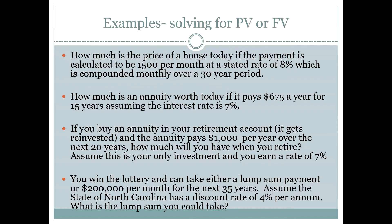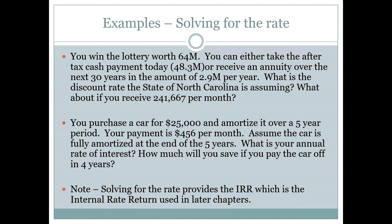Now we'll jump to a bunch of examples. Try to work them without looking at the solutions — these are problems you've already seen in some form, so don't be intimidated by the word problem or the payment. We can also solve for the rate with annuities, just like in the previous chapter. This is going to be a really common problem later in the class, because solving for the rate gives us something called the internal rate of return, which is a really important function we'll use later.